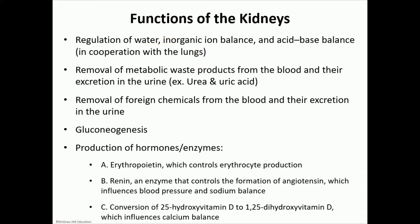The kidneys help us get rid of metabolic waste products — for example, urea, uric acid, excess potassium, excess hydrogen, and bicarbonate. The kidney also helps in removing some foreign chemicals; for example, some medications we take are eventually excreted through the kidneys. It also helps a little bit in gluconeogenesis, although the main organ for that process is the liver.